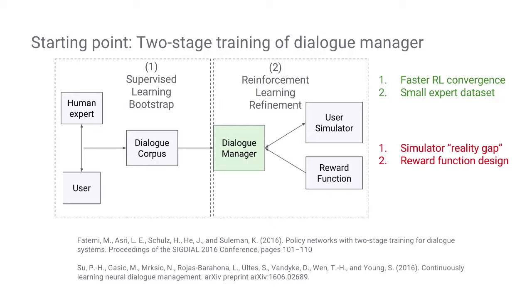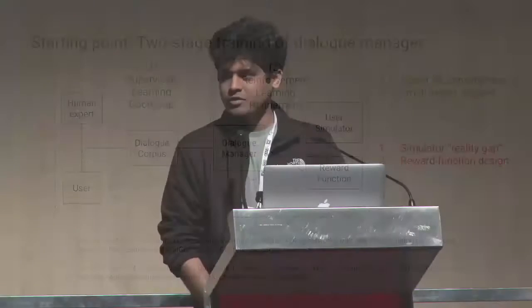To start with, we'll look at some recent work in dialogue systems which uses two-stage training with a supervised learning phase that bootstraps the dialogue manager on a corpus of dialogues collected with a human expert. The dialogue manager is trained to imitate the human expert, followed by a reinforcement learning phase which refines the dialogue manager's strategies by allowing it to interact with the user simulator. This is similar to how AlphaGo has approached the game of Go, and it leads to faster convergence in the RL phase because the supervised learning phase reduces the action space that needs to be explored.